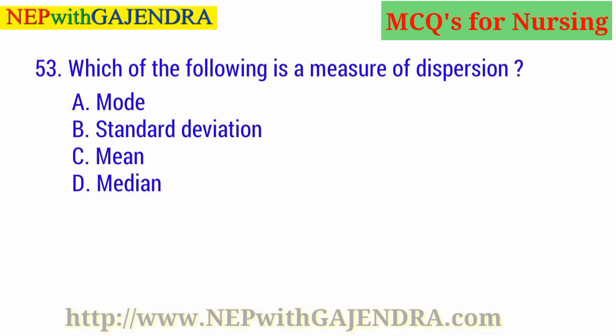Which of the following is a measure of dispersion? A. Mode. B. Standard Deviation. C. Mean. D. Median. The right answer is B: Standard Deviation.